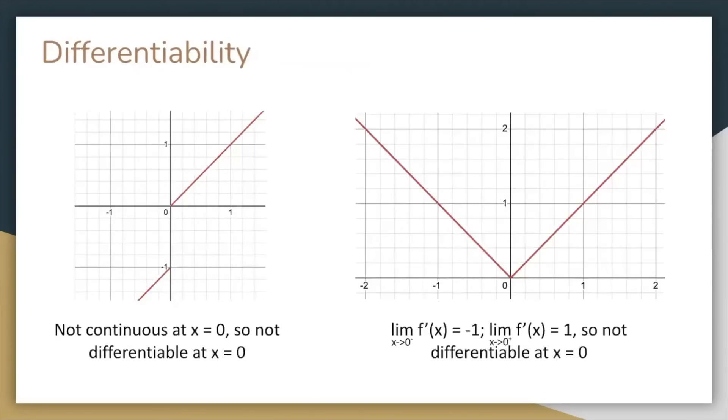Now let's look into the conditions for a function to be differentiable at any particular value. First, it must be continuous at that value. So in this left example, since f isn't continuous at x equals 0, it's not differentiable at x equals 0. Second, the limit as x approaches c of f prime of x must exist. In the second example, the limit as x approaches 0 of the slope from the right is not the same as the slope from the left, so f isn't differentiable at x equals 0.